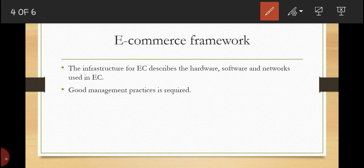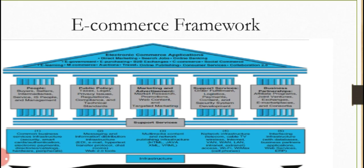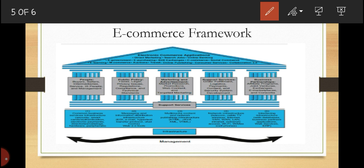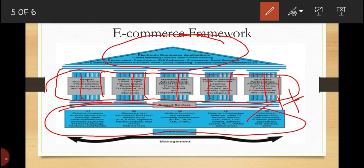We can now see the electronic commerce framework. At the top we have electronic commerce applications. These applications need right information, infrastructure, and support services. People and public policy act as pillars for these applications. Then we need the infrastructure and support infrastructure — that means hardware, software, and network equipment.